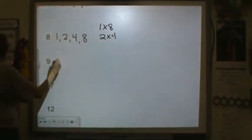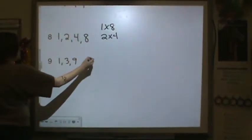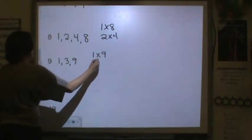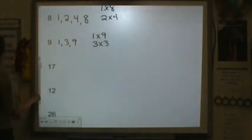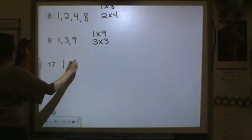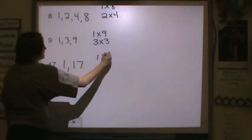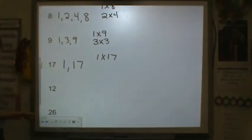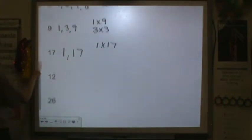9. I have 1, 3, and 9. 1 times 9 and 3 times 3 are my factors. 17. 1 and 17. The only factors that get me to a product of 17 are 1 and 17.